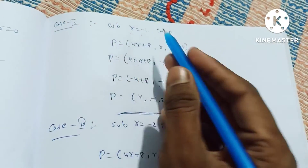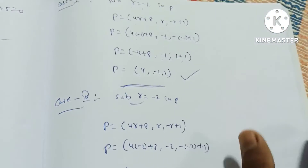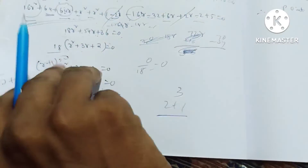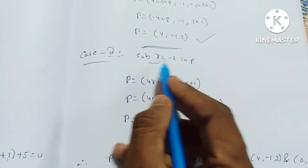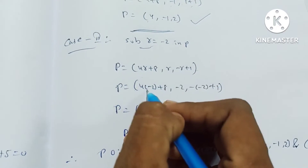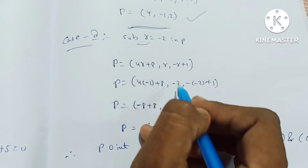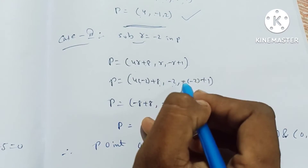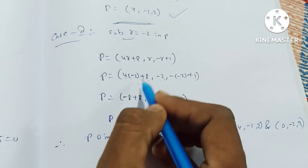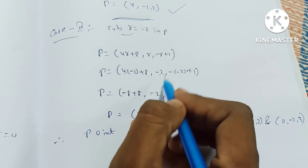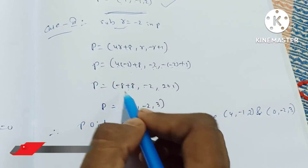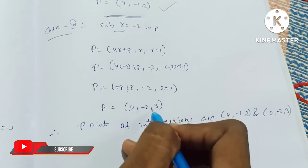Now substituting r equal to minus 2 in P: P point is equal to (4r plus 8, r, minus r plus 1). So 4 into minus 2 plus 8, comma minus 2, comma minus into minus 2 plus 1. That is minus 8 plus 8 is 0, minus 2, plus 2 plus 1 is 3. So the second point of intersection is (0, minus 2, 3).